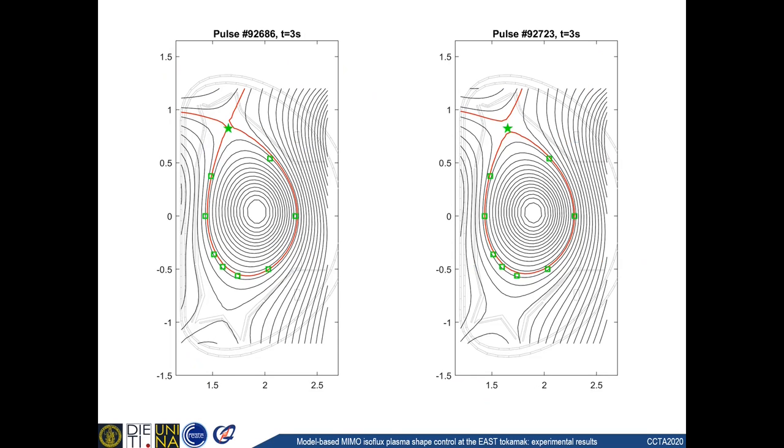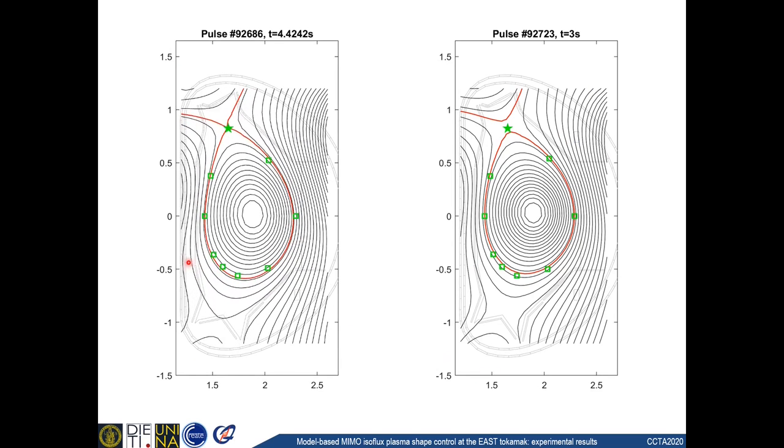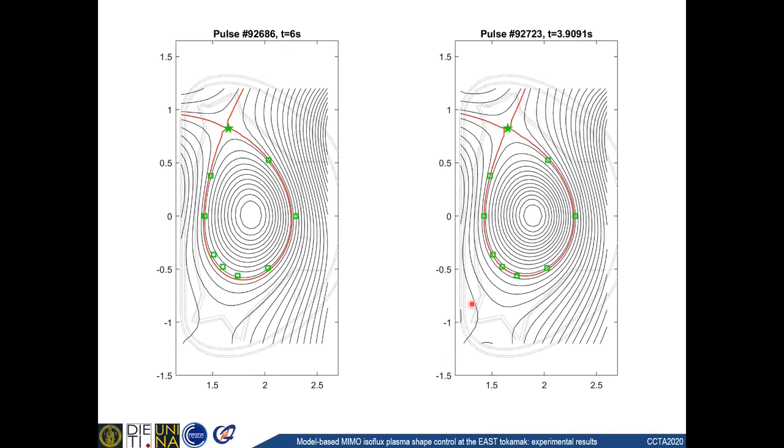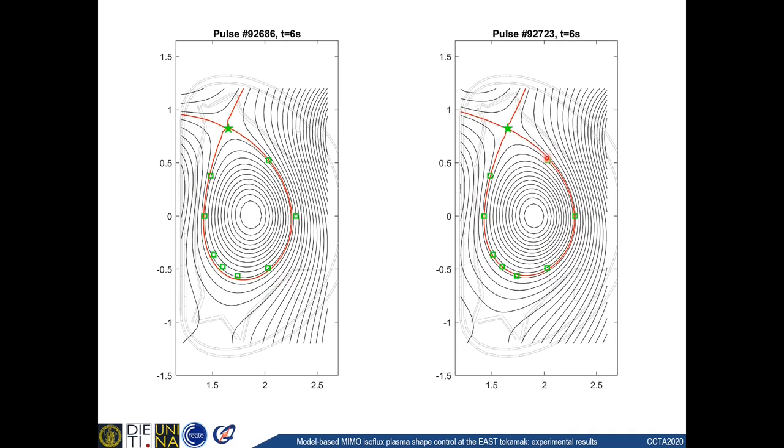You can also see here the reconstructed shape for the first and the last of the presented pulses. You can see that in the first case, we still have some residual error in the lower region of the plasma, while in the second case, the boundary is passing through all of the control points, basically.